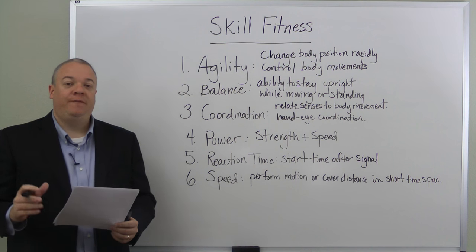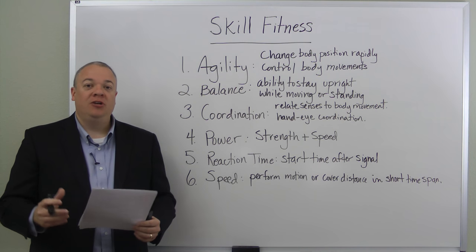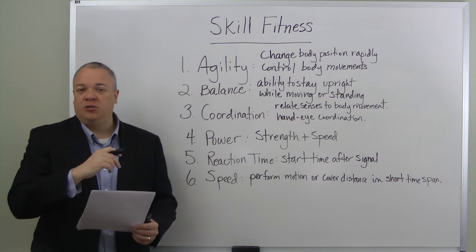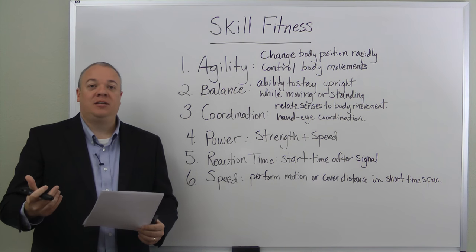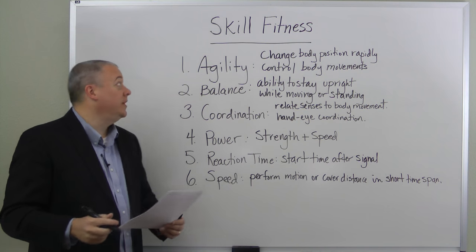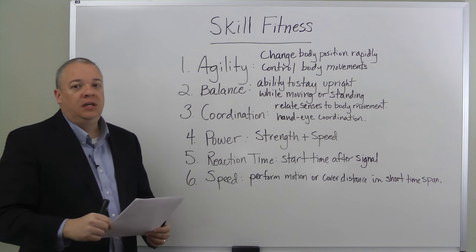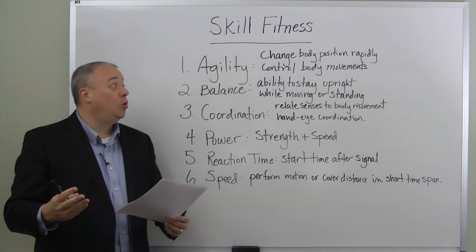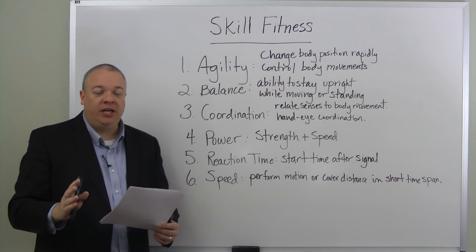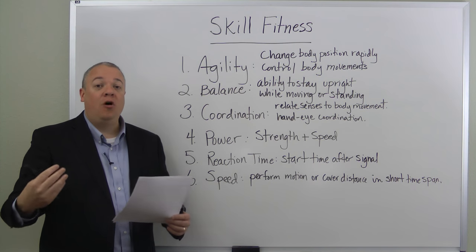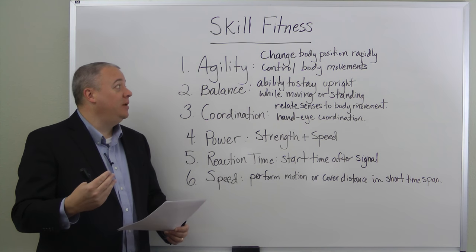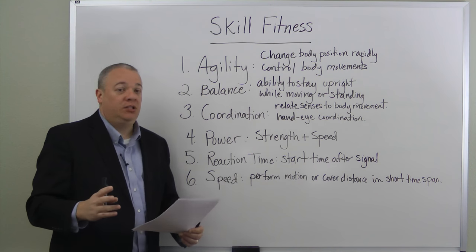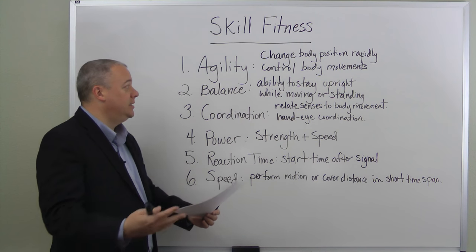Today we're going to go over some basic facts related to skill fitness — how you can tell what level someone has in a particular skill. It can be broken down into six categories. First is agility: the ability to change body position rapidly and to maintain control over body movements. Someone with high agility can rapidly change body position and has a high degree of control over their body's motion. We tend to think of gymnasts as having high agility.